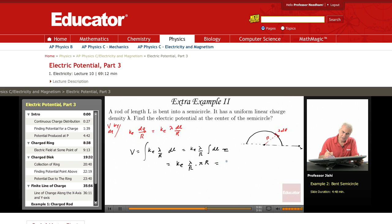So ke, which is 1 over 4 pi epsilon 0, times lambda. The r cancels, times pi.